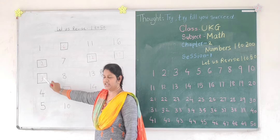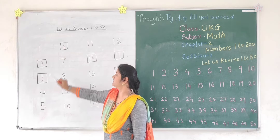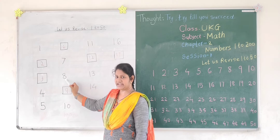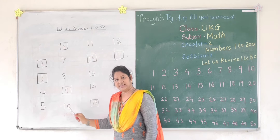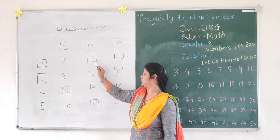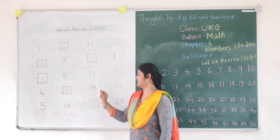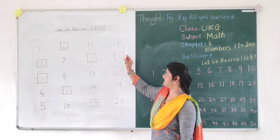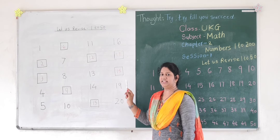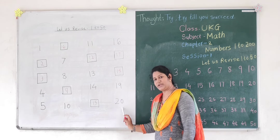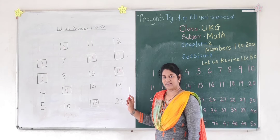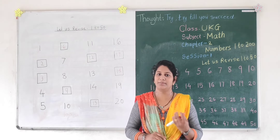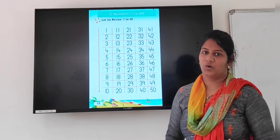Revise. 1, 2, 3, 4, 5, 6, 7, 8, 9, 10, 11, 12, 13, 14, 15, 16, 17, 18, 19, 20. Done? Yes.